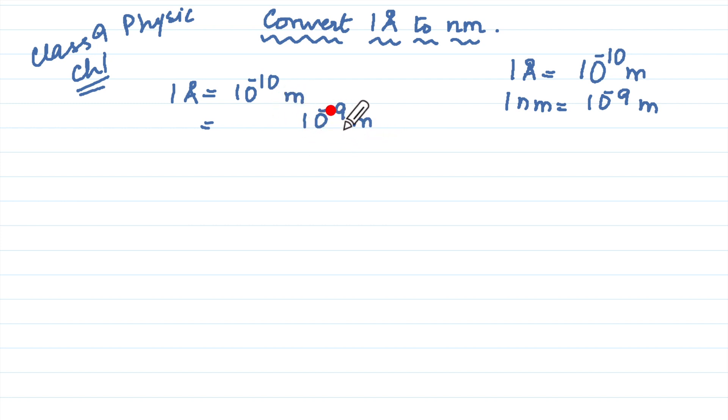Now 10 to the power minus 9 and what will give us 10 to the power minus 10? It will be 10 to the power minus 1, correct. If we use the rules of indices, 10 to the power minus 1 multiplied by 10 to the power minus 9 gives us 10 to the power minus 10, correct.